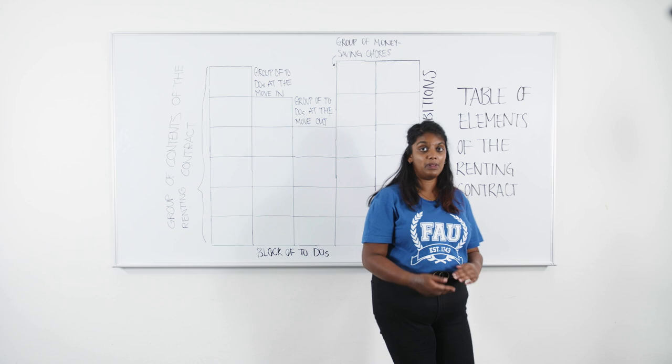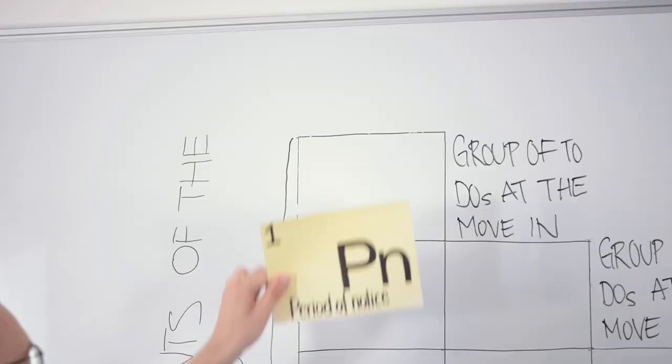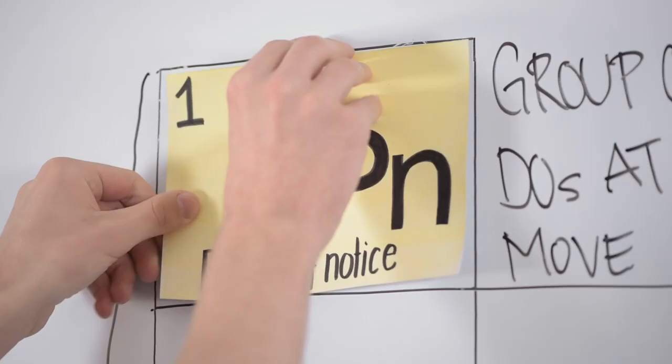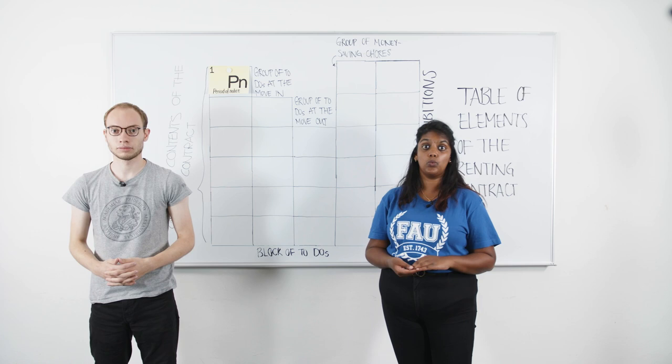About the formalities: we created a little table of elements that you need to be aware of. Let's start with the contents of the renting contract. First, the period of notice. If you want to end your renting contract, you have to cancel it in advance.